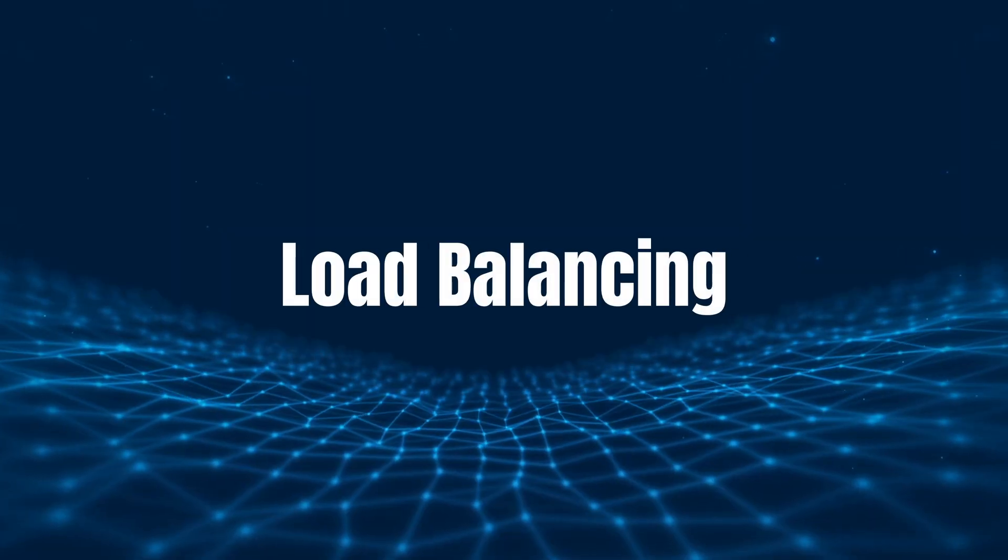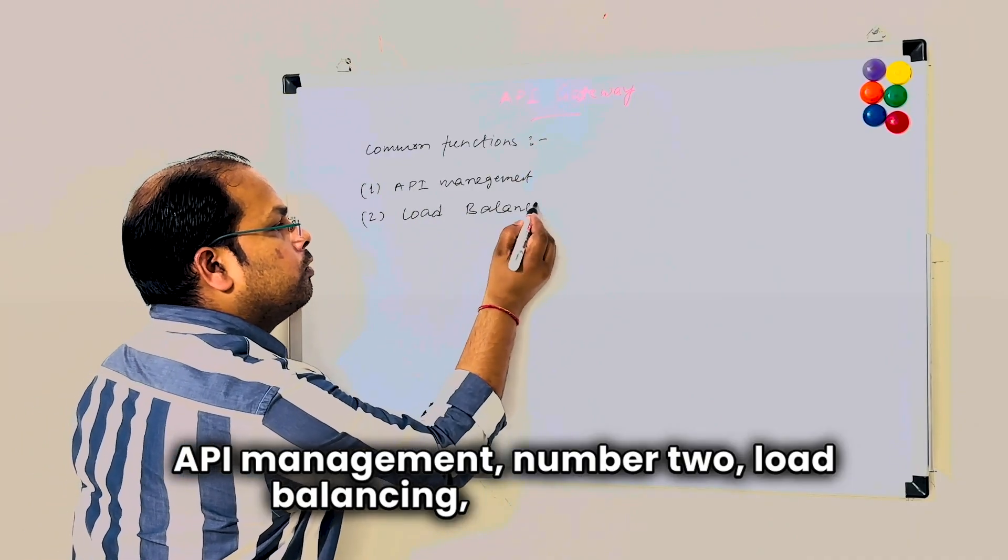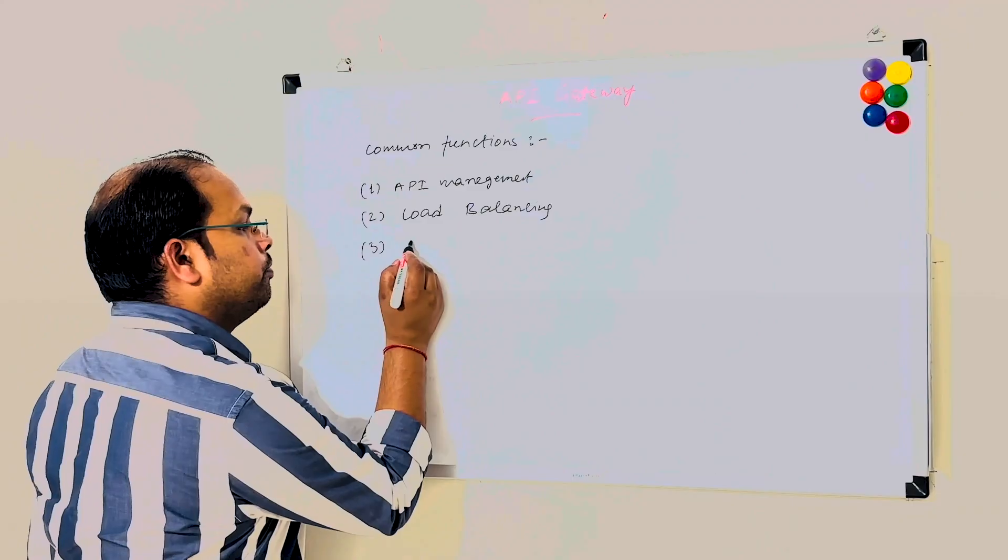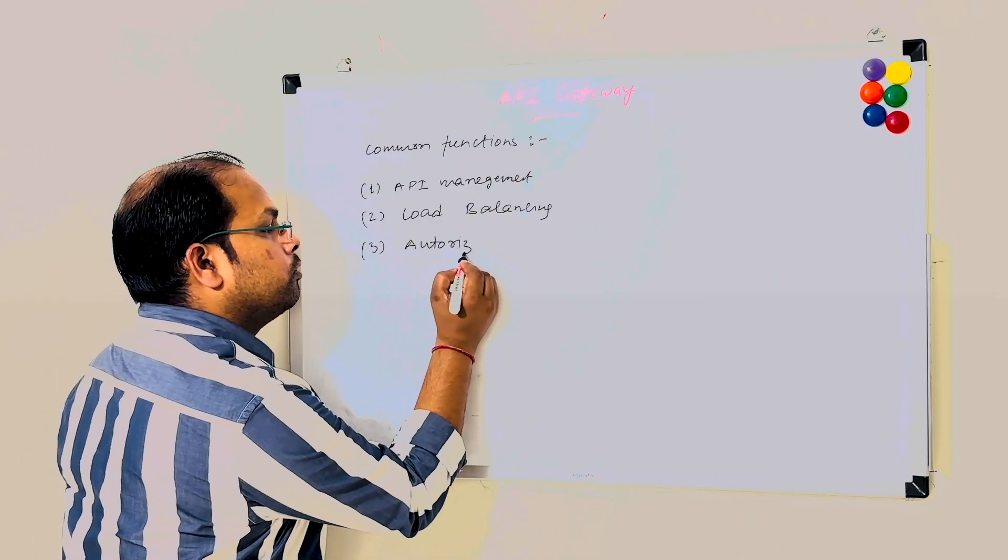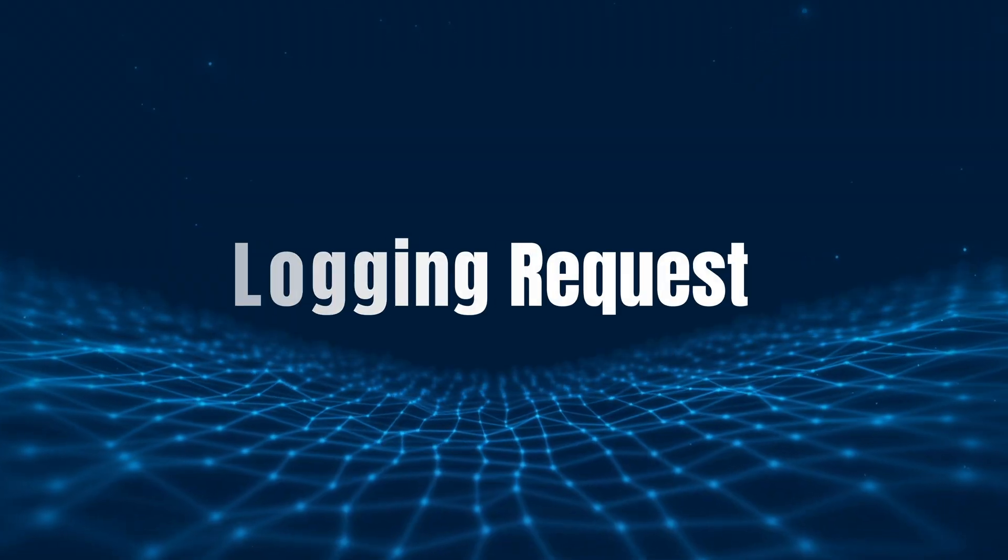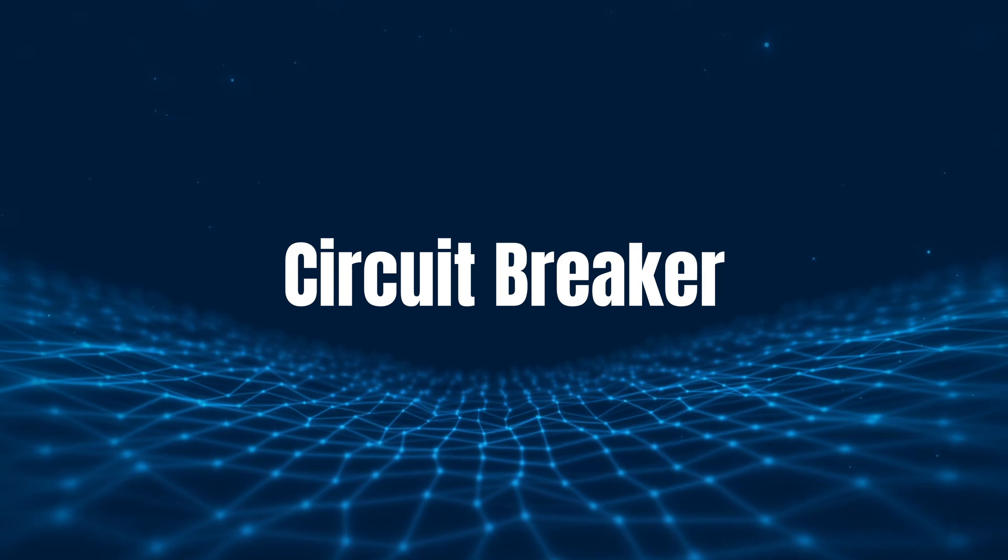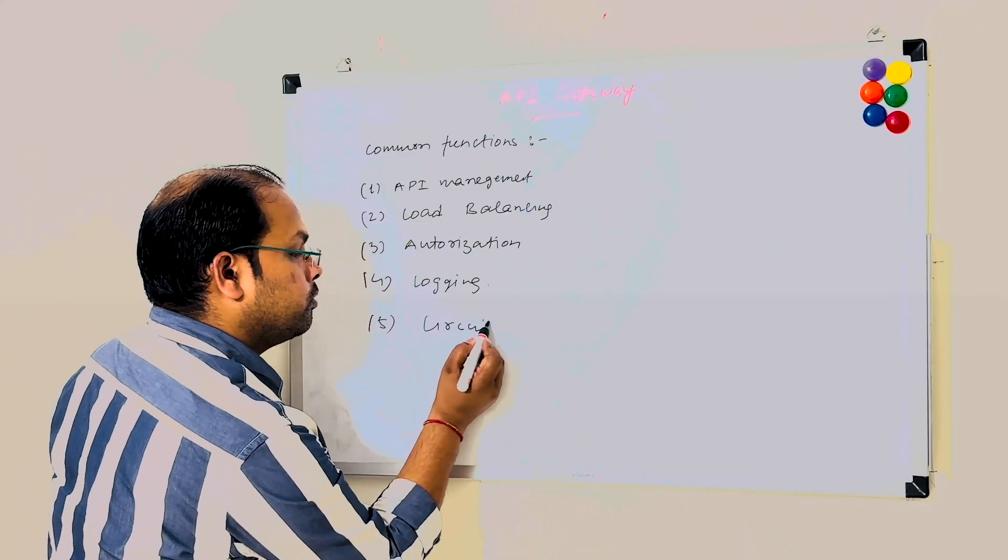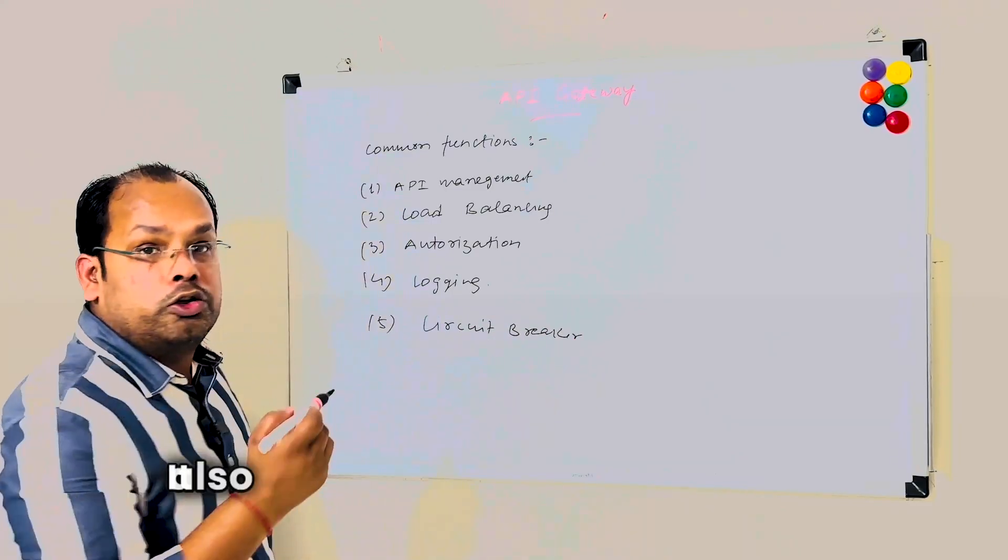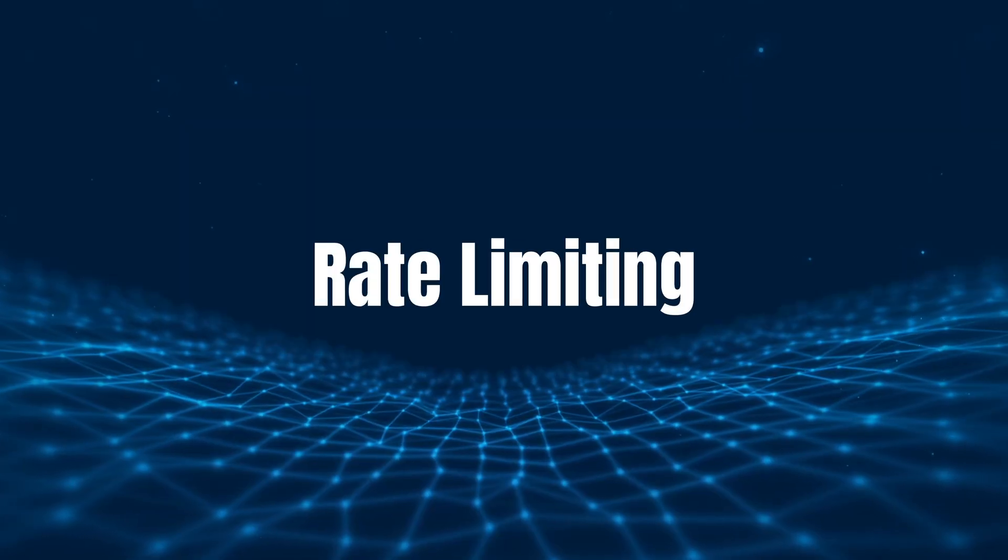Number two: load balancing. Authorization. Logging requests. Circuit breaker. It also provides caching. Rate limiting.